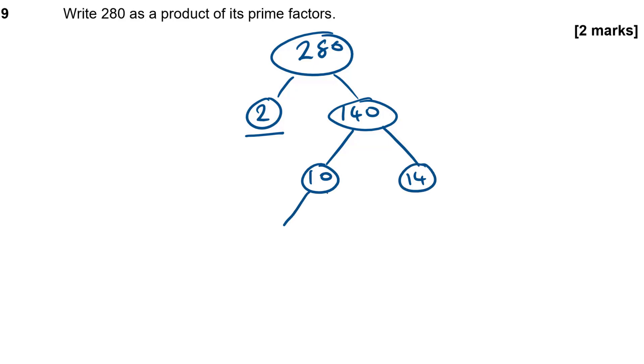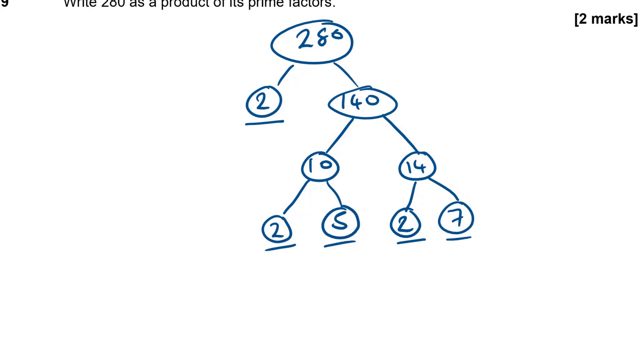Now 10 is not prime, so it splits up as well. So 10 is 2 times 5, and 14 is 2 times 7. Now 2 is prime, 5 is prime, 7 is prime. So all of my branches are now ended. Once you've completed all of them like that, then you can say that 280 is equal to a product of all those prime factors multiplied together. So I've got 1, 2, 3 2's, so 2 times 2 times 2, I've got a 5 times 5, and I've got a 7 times 7.